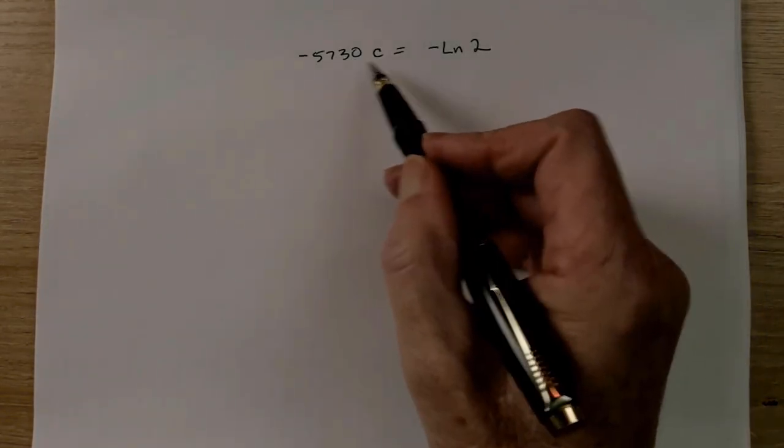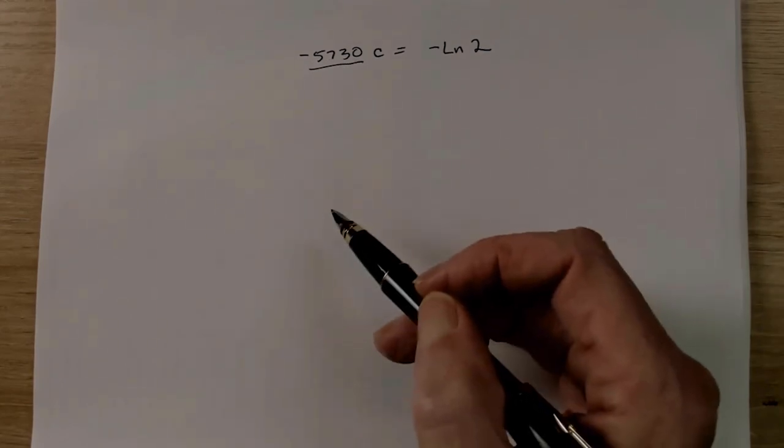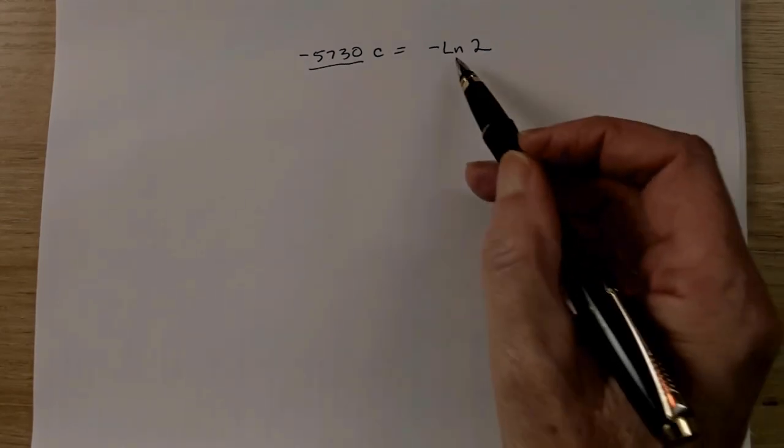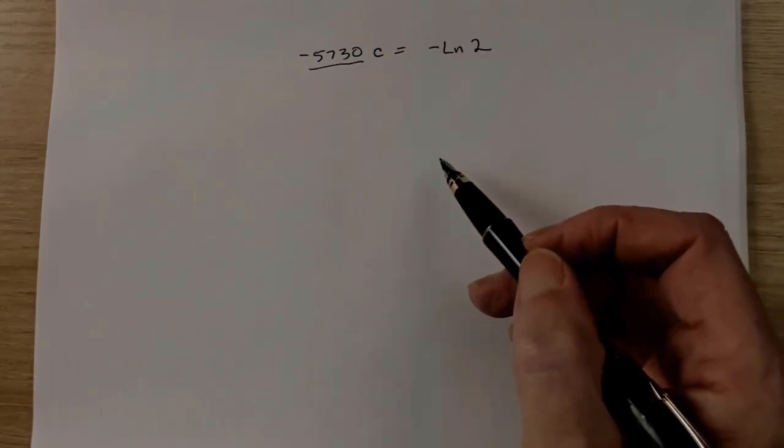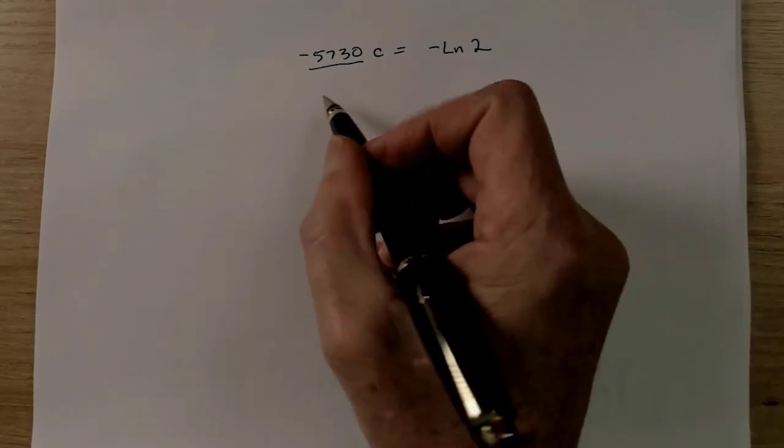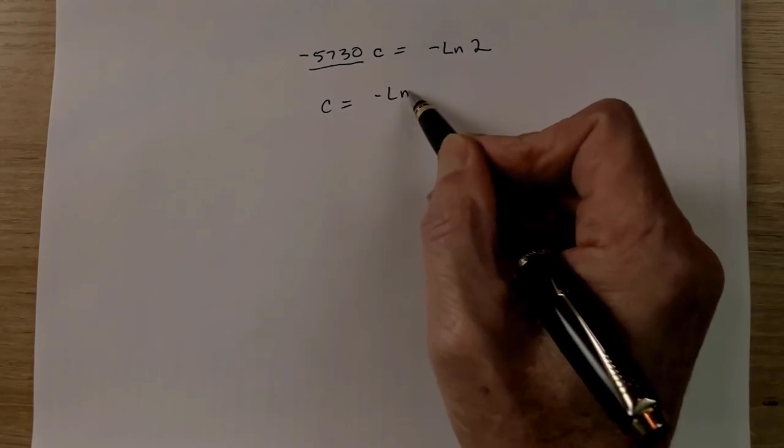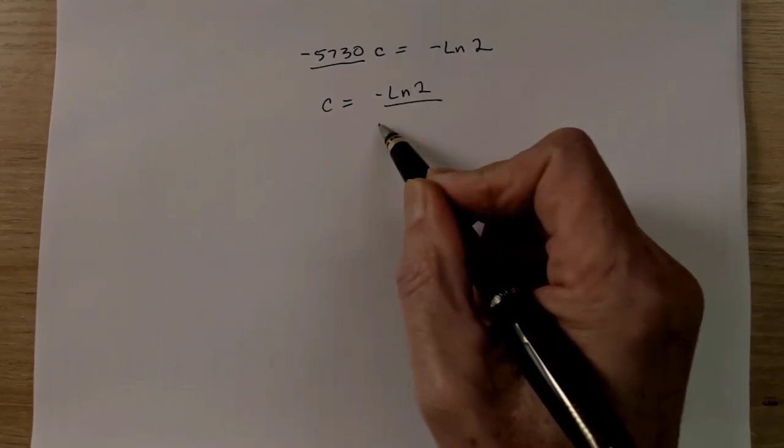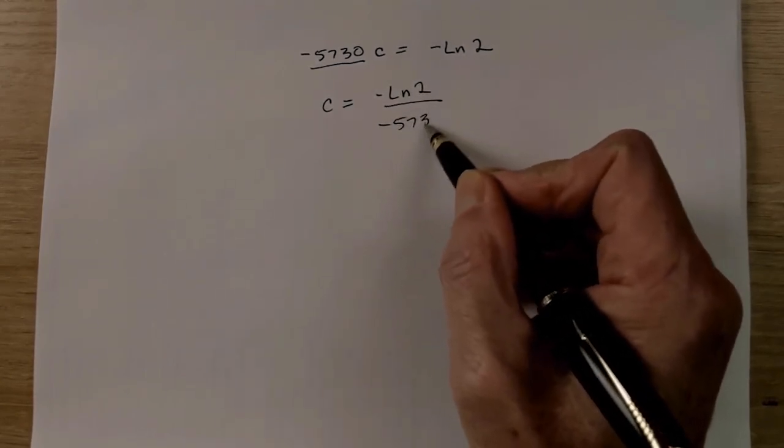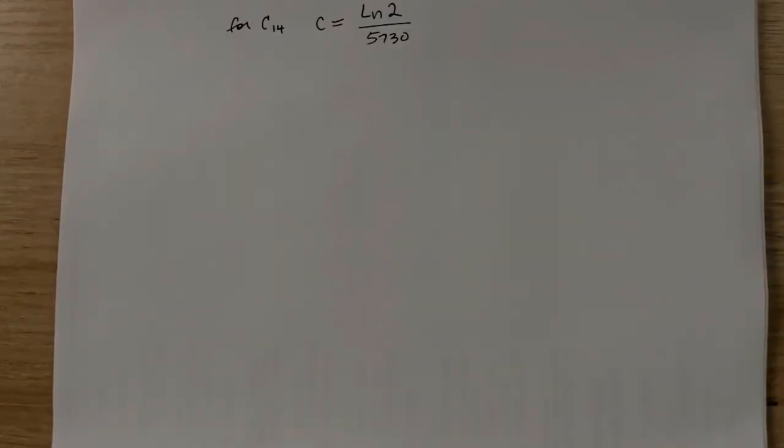Now this number right here equals 0. So negative 5,730C equals negative natural log of 2. So we're in pretty good shape right now. Now to solve for C, what we have to do is we have to take negative 5,730 and divide that into a natural log of 2. So C equals negative natural log of 2 over negative 5,730.